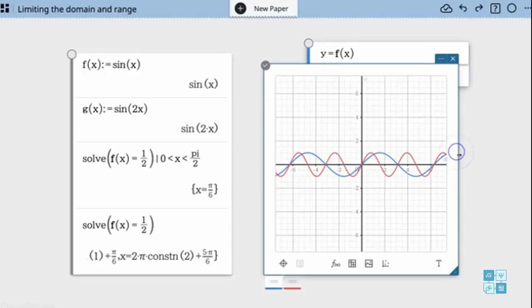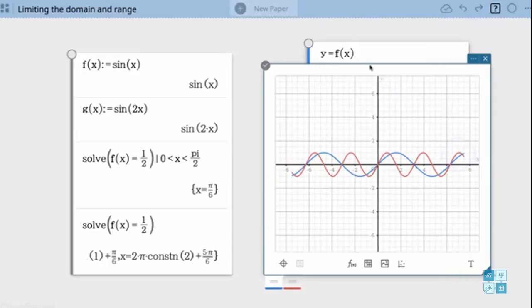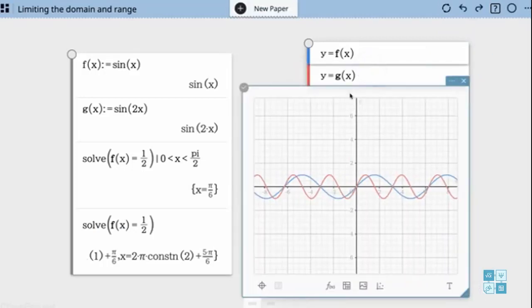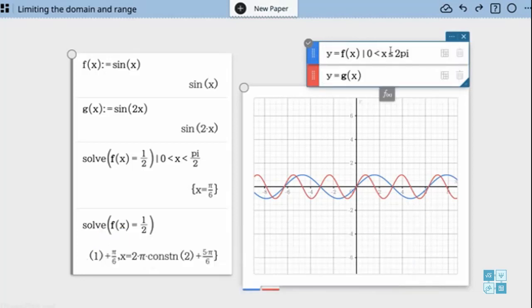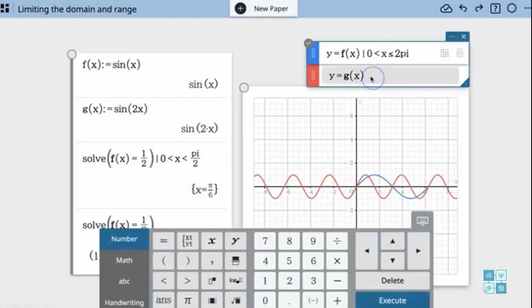And we'll notice when I stretch this out we get lots of solutions. The graph going on to infinity in both directions. Let's just limit it to the domain of the function. So we want to go between 0 which is less than x which is less than or equal to 2 pi. And I can either use the word pi or the symbol pi here. It really doesn't matter. And then you'll notice that my blue function has shrunken down.